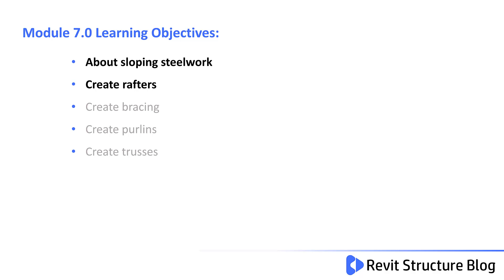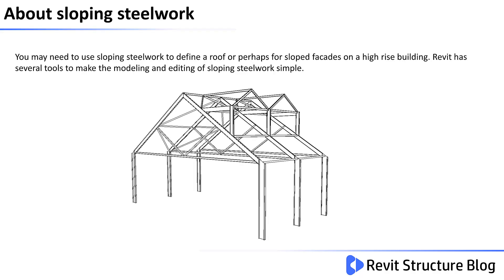Welcome to Module 7.0. In this lesson you'll learn about sloped steelwork and how to create rafters. You may need to use sloping steelwork to define a roof or perhaps a sloped facade on a high-rise building. Revit has several tools to make the modelling and editing of sloped steelwork simple. In Module 6 we looked at structural framing that was predominantly flat and level, but most building structures would at some point require steelwork placed on a sloped plane with bracing members set out on inclined planes that can form compound angles. In this module we will focus on the placement and control of sloped structural steelwork.